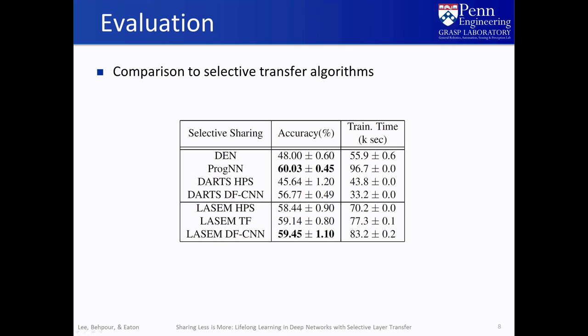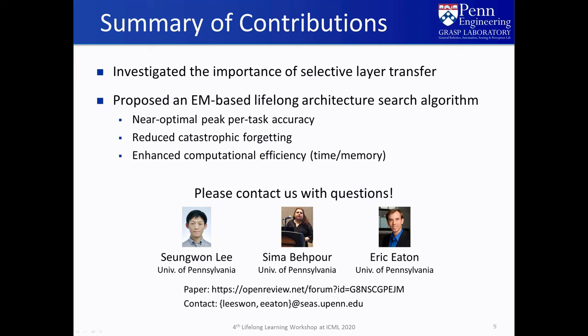Finally, we compared LASEM with existing selective transfer methods. Each of these baselines has some weakness in comparison to LASEM, such as low per-task performance, computational inefficiency, or dependency on a particular architecture. LASEM, on the other hand, shows good per-task performance regardless of the transfer mechanism, with only a slight increase in the computational burden.